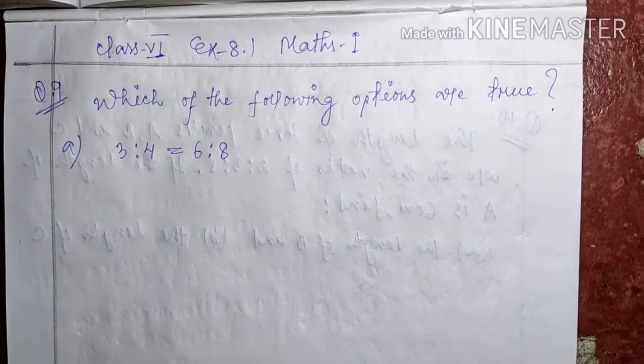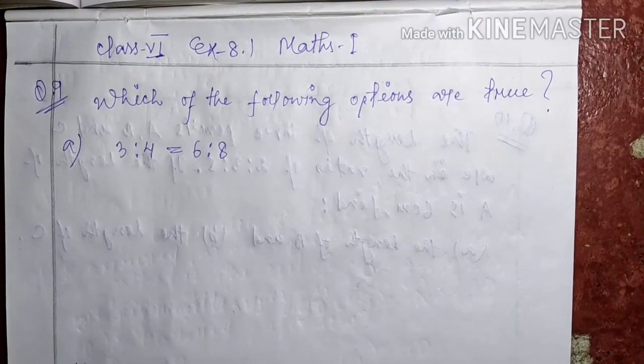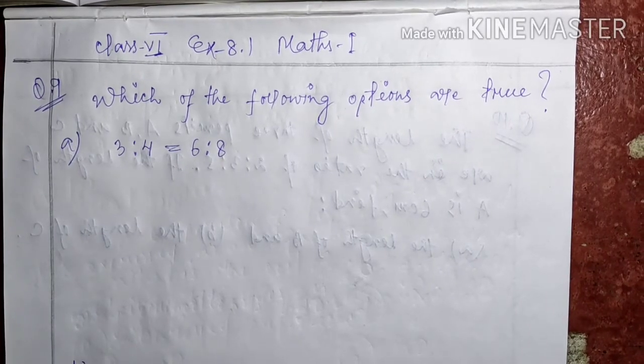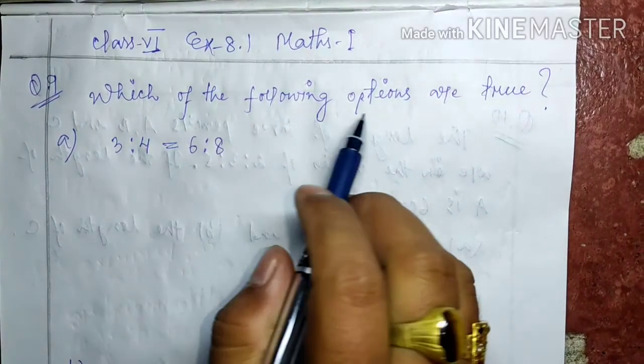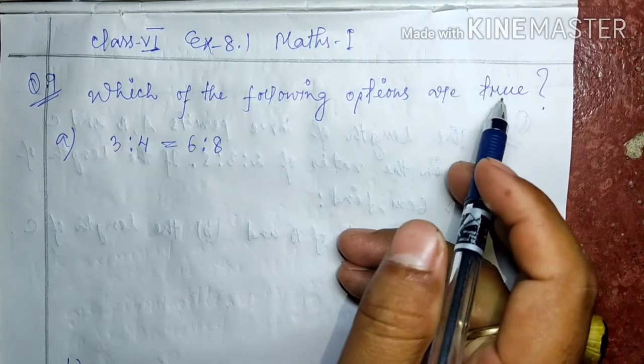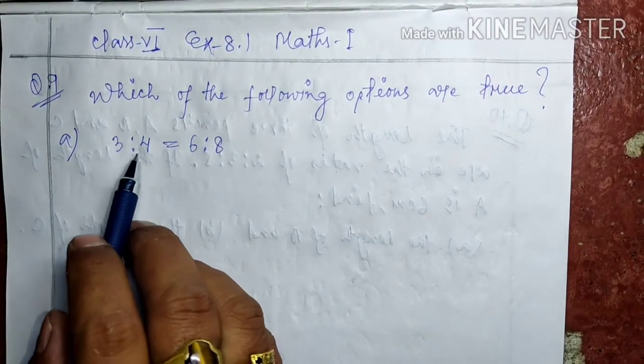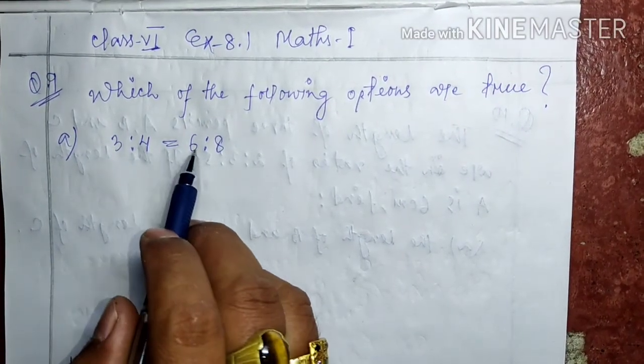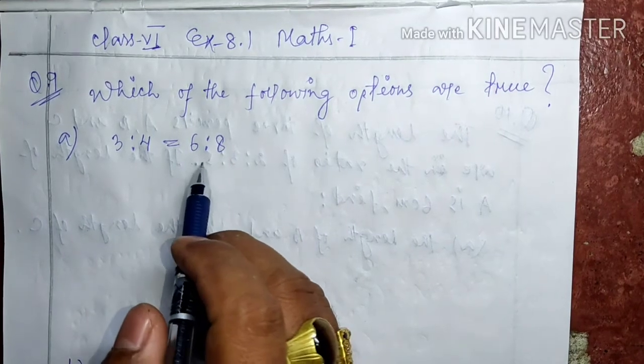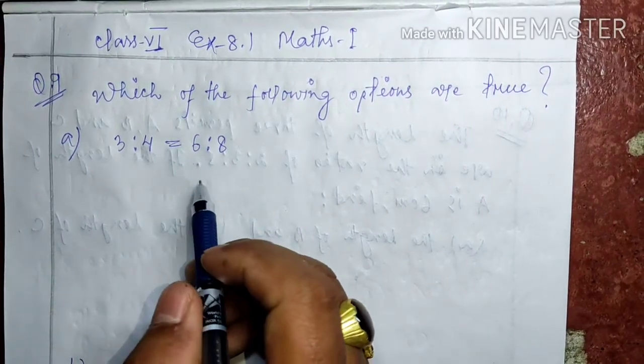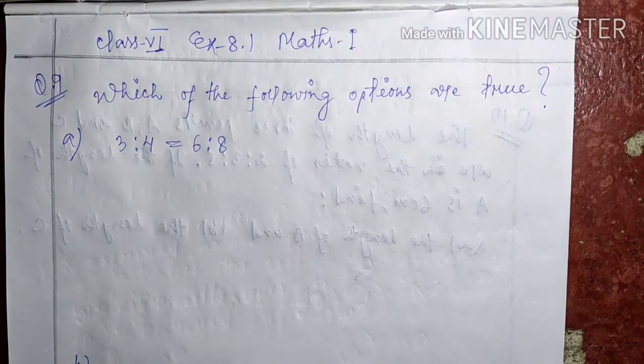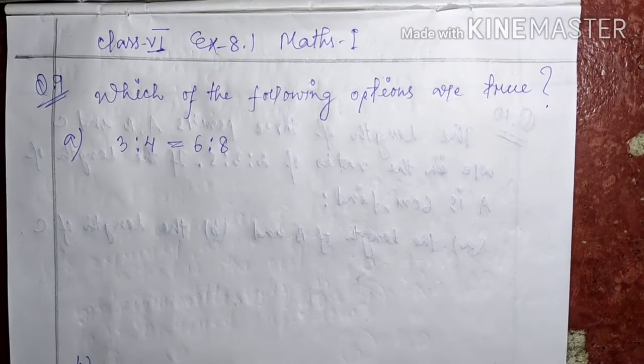Hello children, today we are going to solve exercise 8.1, question number 9. Which of the following options are true? Part a: 3 is to 4, whether it is equal to 6 is to 8. We will check whether this statement is true or false.